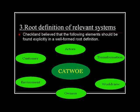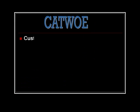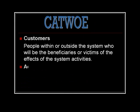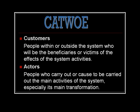Group definition of root one system. Chapman believes that the following elements should be found explicitly in a well-formed group definition. We also call it CATWOE. Now I am going to explain to you what CATWOE is.